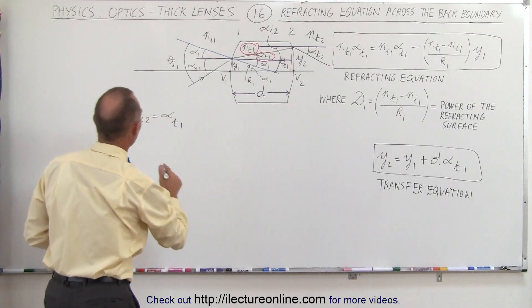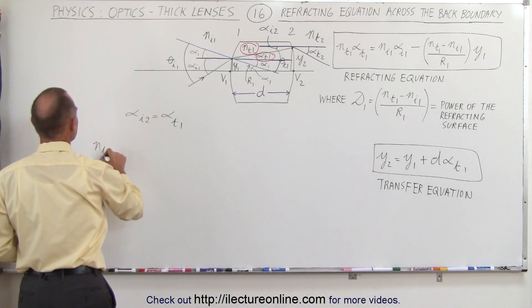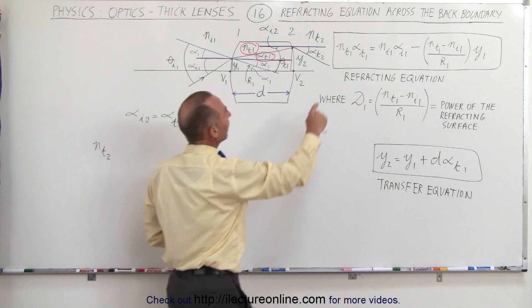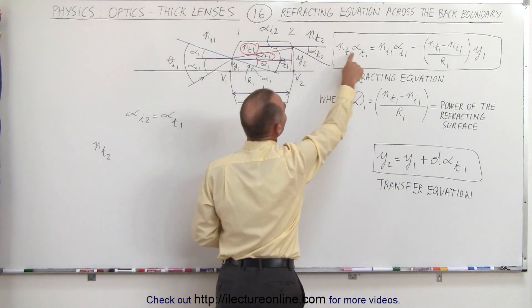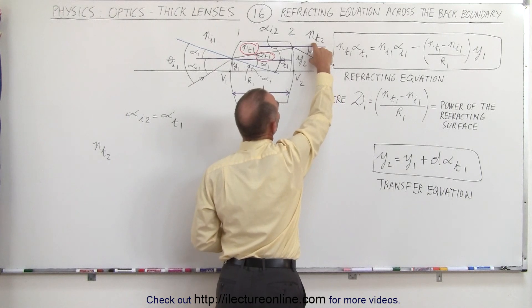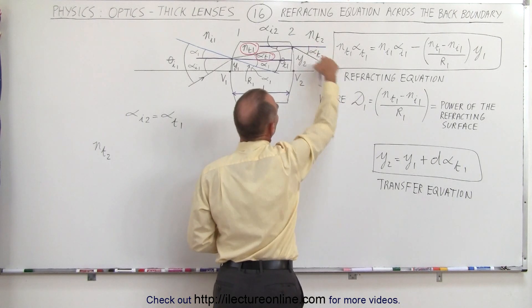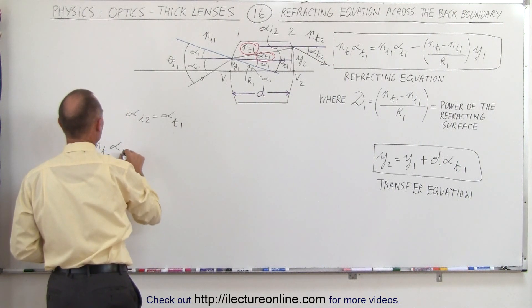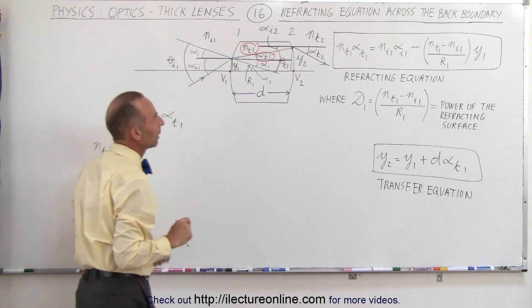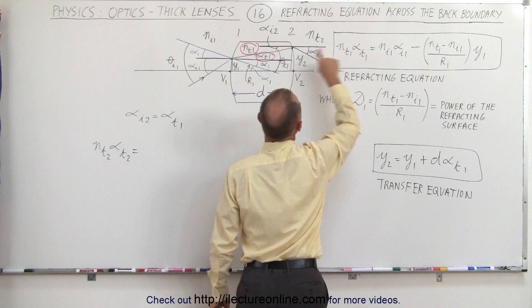So we're going to have NT2 instead of NT1, the index of refraction on the other side of the boundary, times the angle of the transmitted ray. Notice the ray goes in this direction, that will be the angle. So we write this times alpha T2 equals the index of refraction of the incident ray,